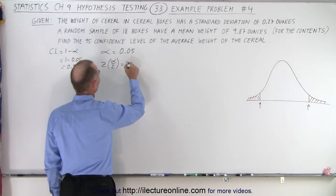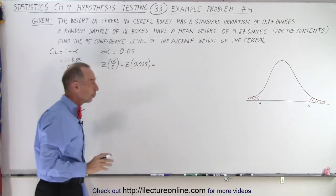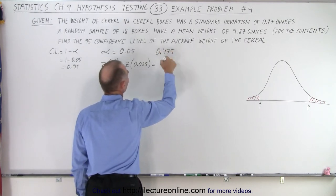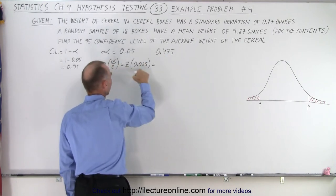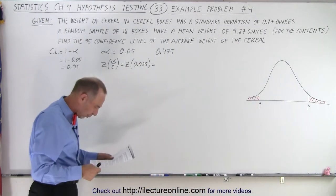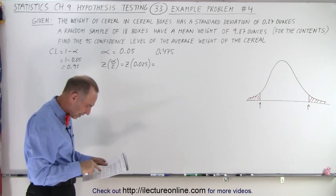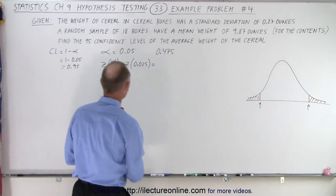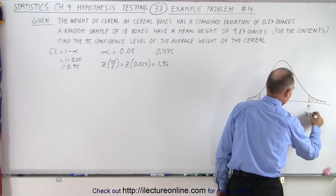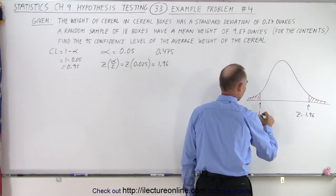To find the boundaries of the critical regions, we take the z-score of half the level of significance, because it's a two-tailed problem. So we want to find the z-score of 0.025. We subtract this from 0.5, giving us 0.475. We look this number up in the table to find the corresponding z-score. Going to the table, we find 0.475, and it gives us a z-score of 1.96. That means the upper limit is 1.96 and the lower limit is minus 1.96.